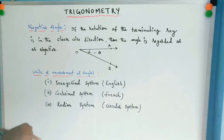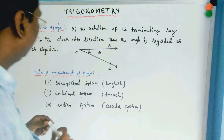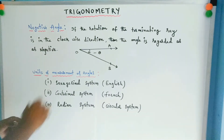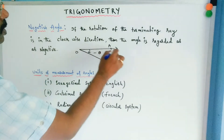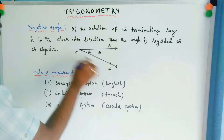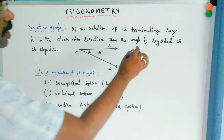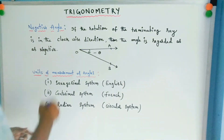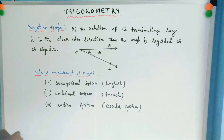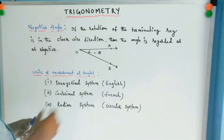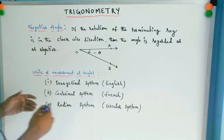Next, negative angle: if the rotation of the terminating ray is in the clockwise direction, the angle is regarded as a negative angle. Here OA is the fixed ray and OB is the rotating ray — clockwise direction gives a negative angle, denoted as minus theta.